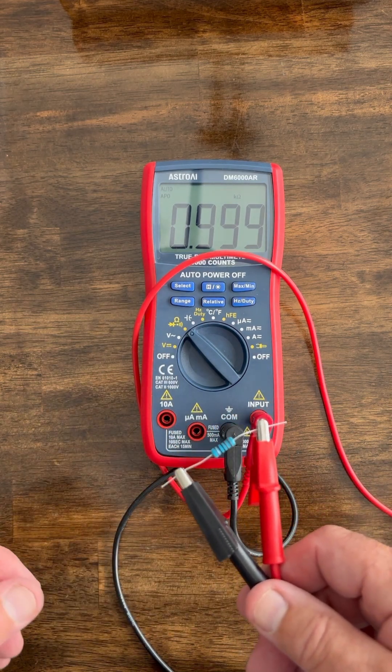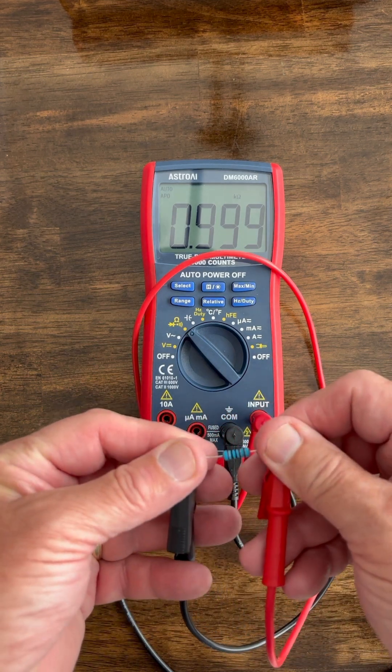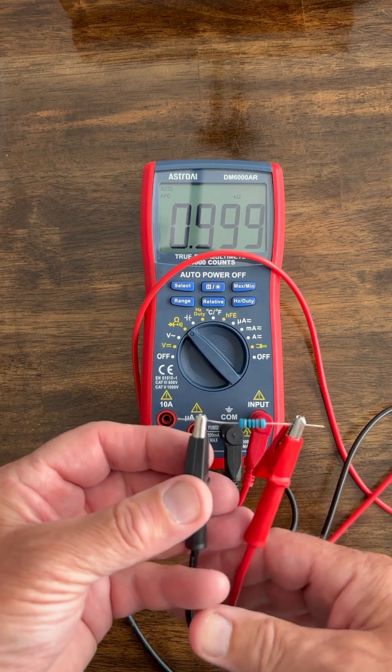But one thing you do want to make sure when you're measuring resistance: always take it out of the circuit and don't put your hands on it like this. It will slightly change the reading.